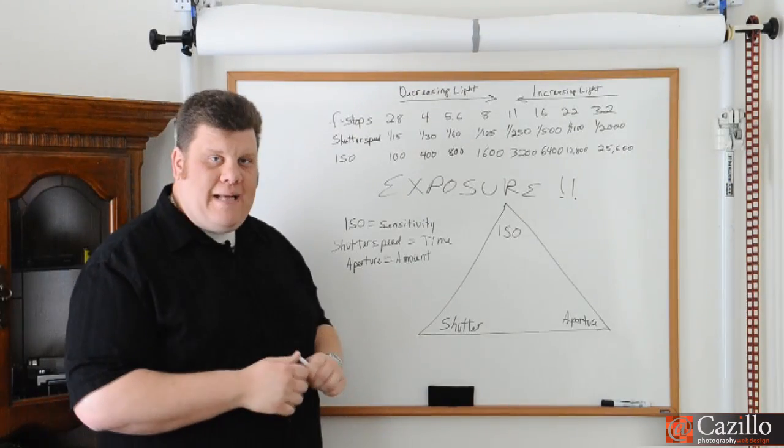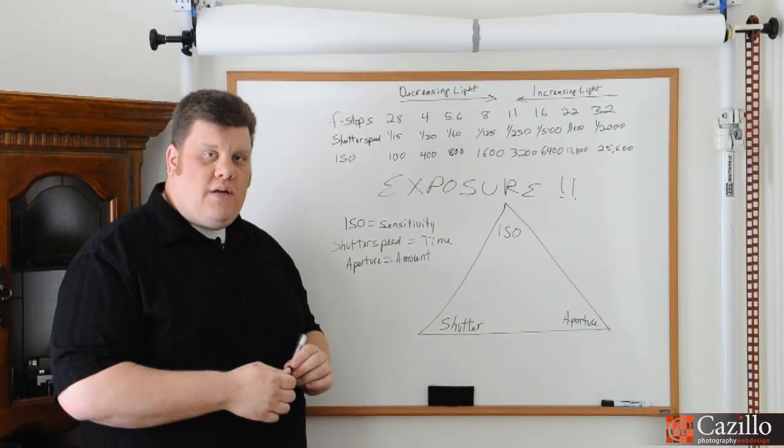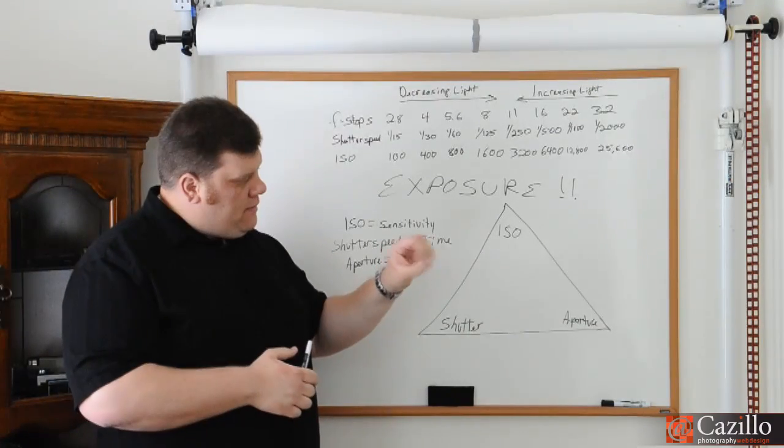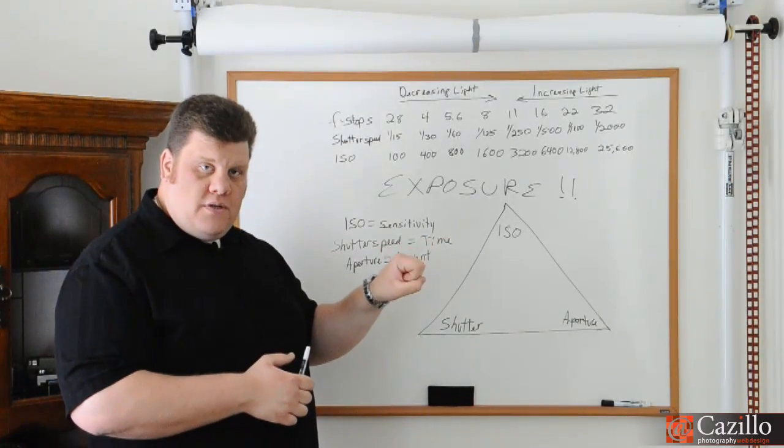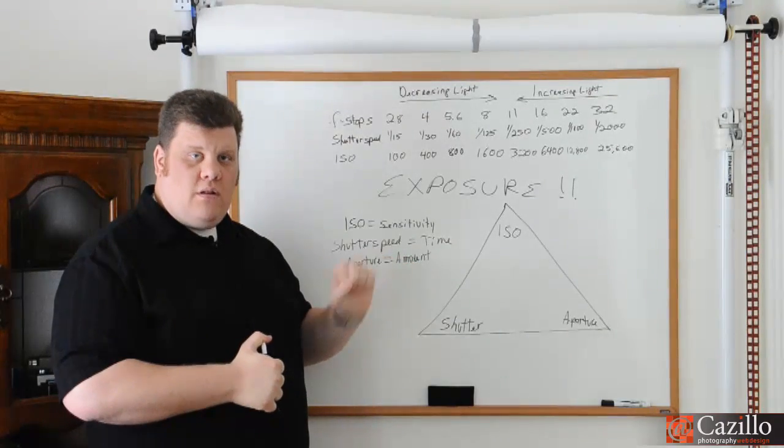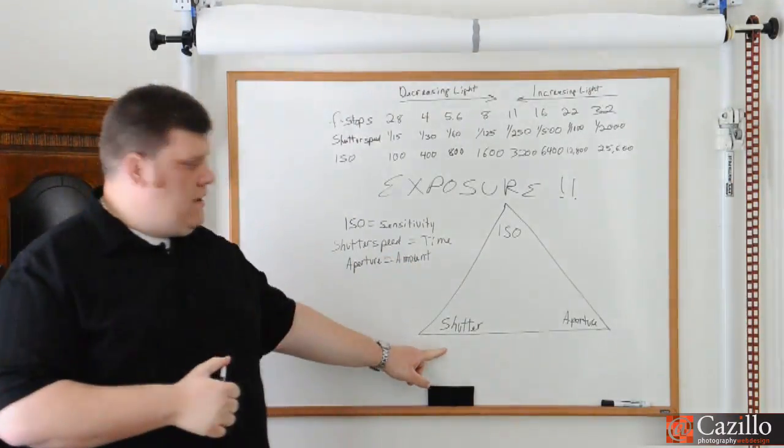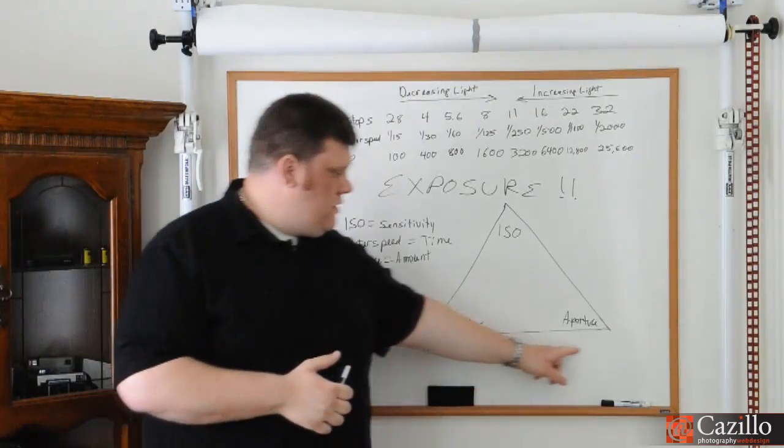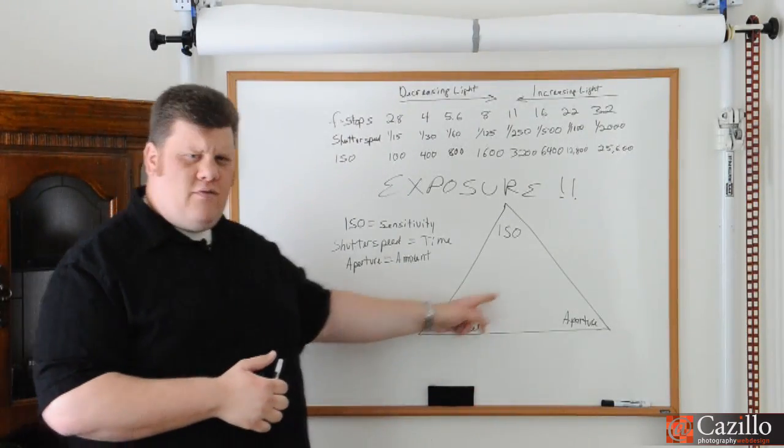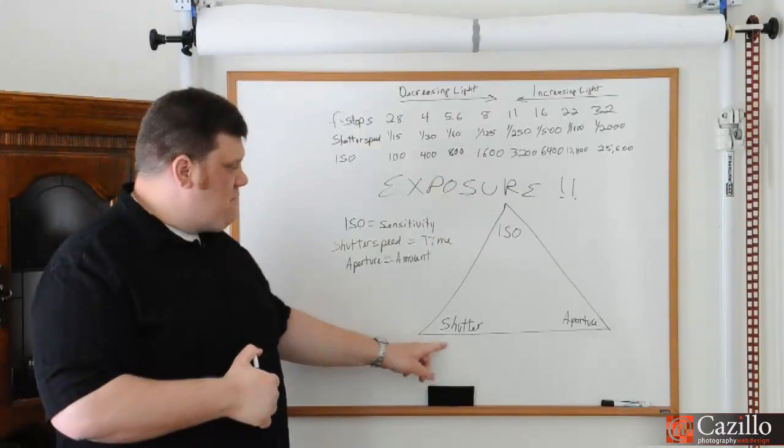Last one is the aperture or the amount of light. On the inside of your lens, there's a diaphragm and that diaphragm opens and closes, depending upon how much light you're letting in. So, what we have created here is what's called the exposure triangle. I should have written that in the middle, huh? The exposure triangle.